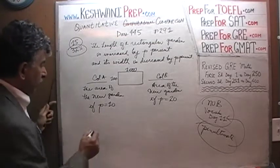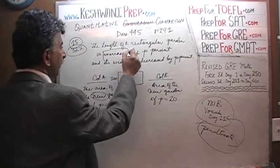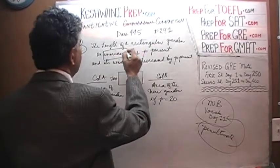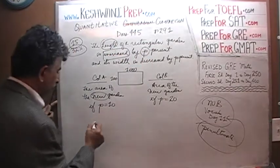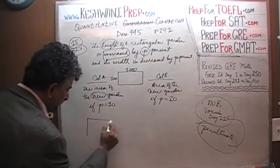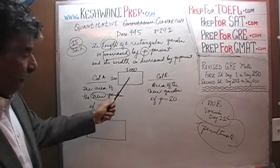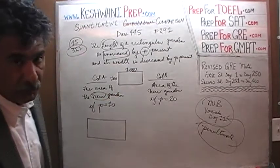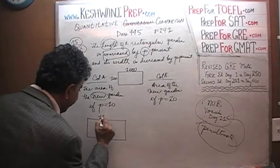So let's get going. Here, we are going to increase the length. Here is our new garden. We are going to increase the length by 10%. So here is our new garden. Our length before was 1000. 10% of 1000 is 100. So it's going to be 1100. So this is going to be 1100. Very simple. Very straightforward.